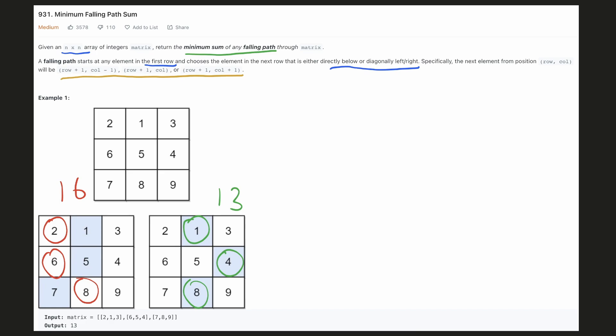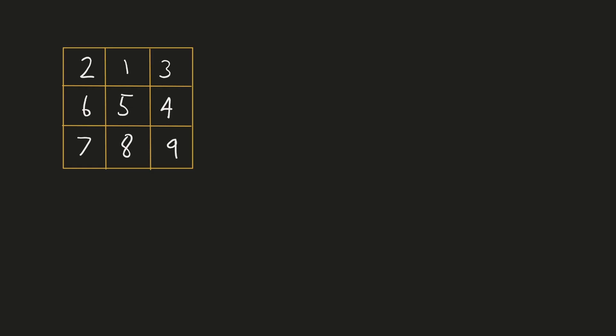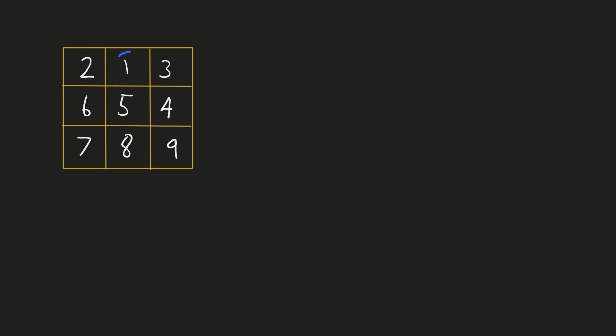Let's try to come up with an intuitive solution. As per the problem statement, when we choose an element, we have three choices: we can choose an element directly below, diagonally right, or diagonally left. If there is no diagonally left element, we will not consider it. This process has to be repeated for each element in each row, and when we reach the last row, there are no rows below so we can stop.